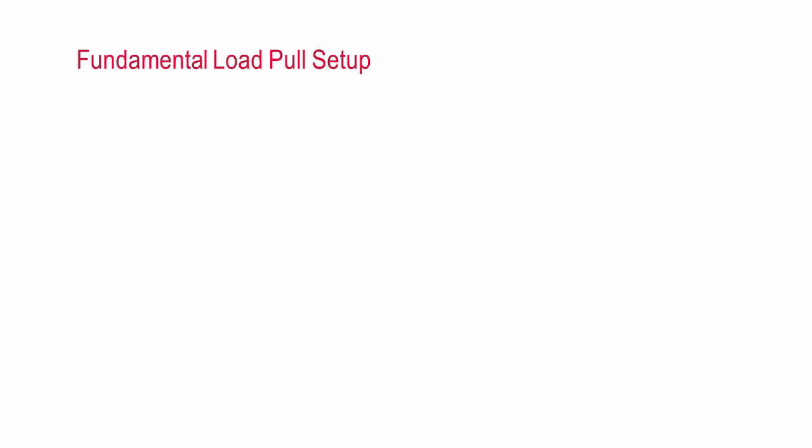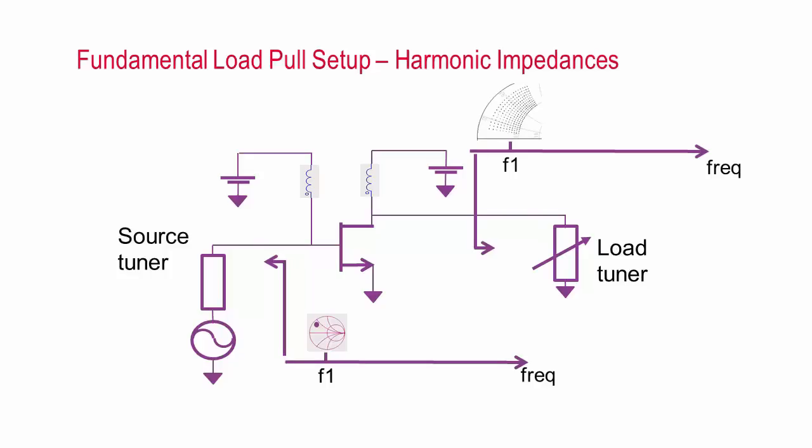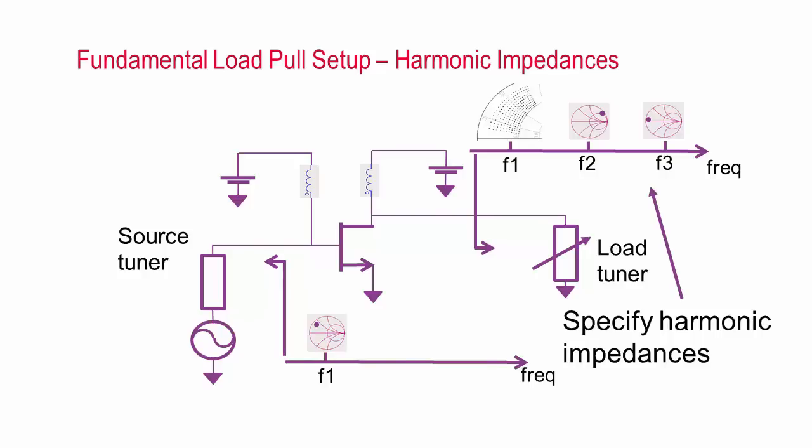When setting up a load pull, the first thing we need to specify is the range of load impedances to sweep or pull, and here I am showing a sweep of the real and imaginary parts of the load impedance, which is good if you think the optimal load will be near a short circuit. We also need to specify other things like the bias voltages, which will determine the bias current and over what fraction of the input cycle the device will conduct, and the source impedance, frequency, and power. But you also need to specify the harmonic impedances, which become more important the further into compression the device is being driven.